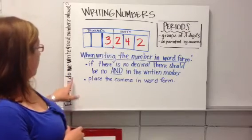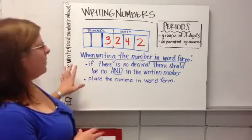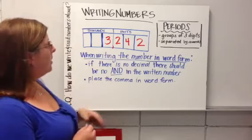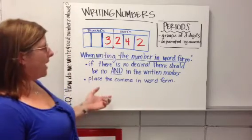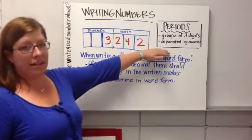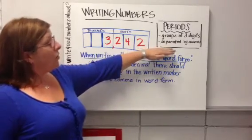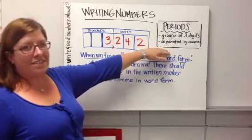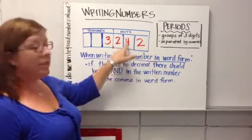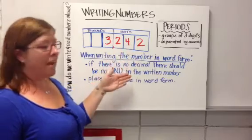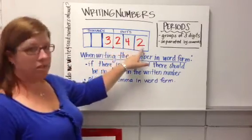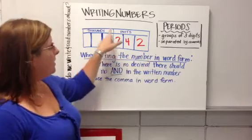Today's lesson is on how we write and read numbers aloud. The first thing we're going to talk about is writing numbers. We learned yesterday about periods in place value — how periods are groups of three digits separated by commas. Here we have our units period, which we don't say. We don't say the ones period, but it's 242. And here the three is in the thousands unit.